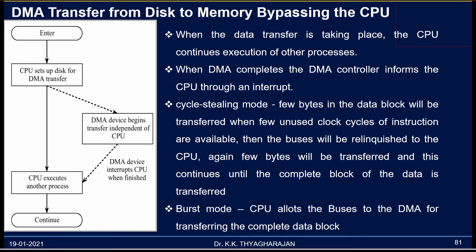An instruction will have many clock cycles, but all the clock cycles will not be used by the CPU for executing the instructions. Some clock cycles will be free — the address and data buses will not be used by the CPU. Those clock cycles will be allocated by the CPU for DMA transfer, so few bytes will be transferred from hard disk to main memory during that period. For each instruction, there will be few unused clock cycles, and those clock cycles will be used to transfer data using DMA. This type of data transfer is called cycle stealing.